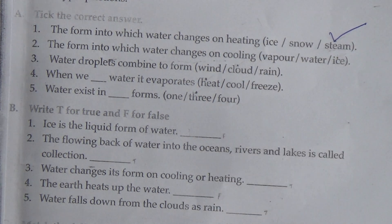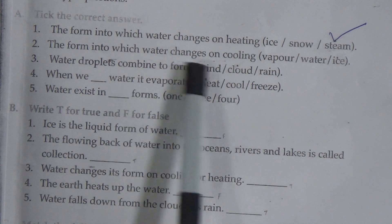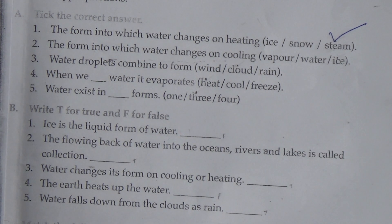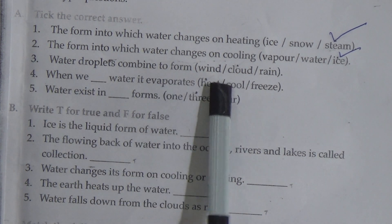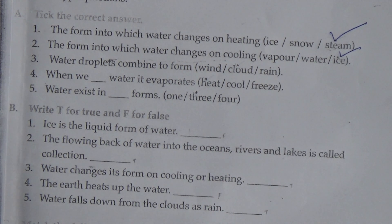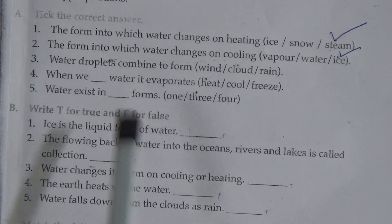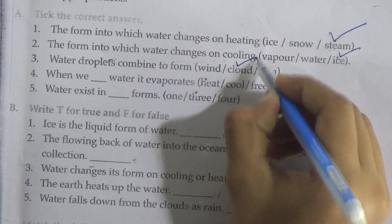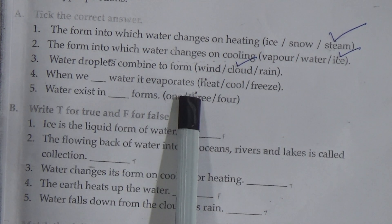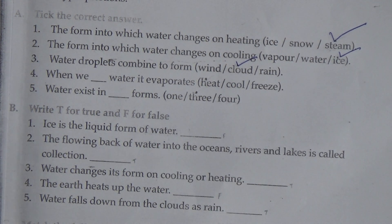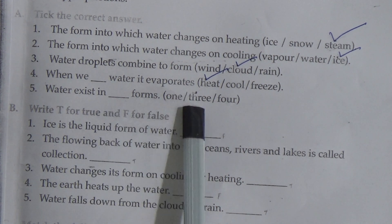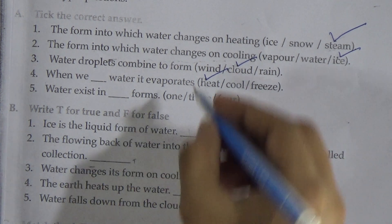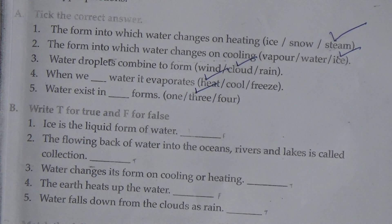Number 2: the form into which water changes on cooling — vapor, water, ice. When we cool water down, it changes into ice. Number 3: water droplets combine to form — wind, cloud, rain. We know that when water droplets condense they create a cloud. So: cloud. Number 4: water is evaporated by — heat, cool, fridge. We know that when we give heat to the water, it becomes evaporated. Tick mark on heat. Number 5: water exists in how many forms — 1, 2, 3, 4. The answer is 3. Water exists in 3 forms: solid, liquid, and gaseous.